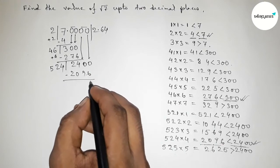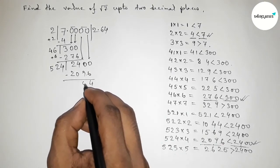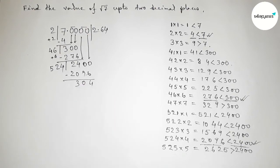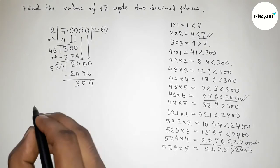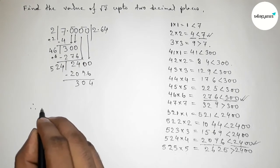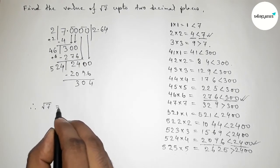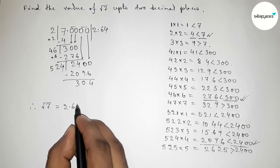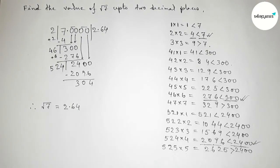Subtracting: 2400 minus 2096 equals 304, and the process continues. We only need the value of root 7 up to 2 decimal places, so the value of root 7 equals 2.64. That's all — thanks for watching! If this video is helpful to you, please share it with your friends.